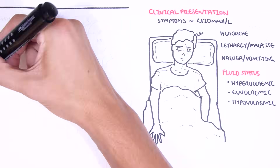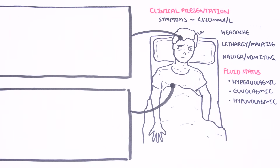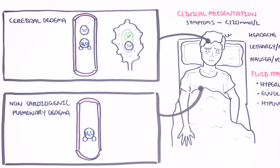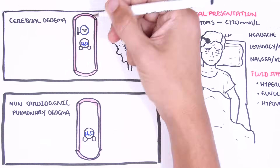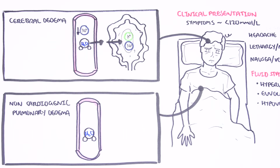If the drop in sodium is rapid, fluid shift into the intracellular compartment can be rapid and lead to brain swelling — cerebral edema — and also non-cardiogenic pulmonary edema. In cerebral edema, there is normally equilibrium of electrolytes and water between intracellular and extracellular compartments in the brain. If there is a sudden drop in serum sodium, water will shift over to the brain tissue where more electrolytes are, causing cerebral tissue to swell, which can lead to seizures.